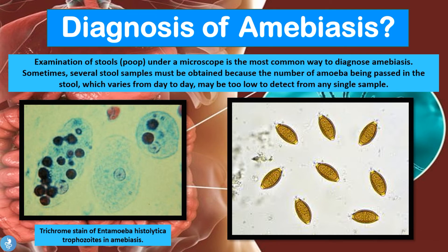Regarding the diagnosis of amoebiasis, examination of stool samples under the microscope is the most common method. Sometimes several stool samples must be obtained because the number of amoebae passed in the stool varies from day to day and may be too low to detect from a single sample. Looking at the microscopic images shown, the first is a trichrome stain of Entamoeba histolytica, showing the typical appearance of the trophozoite on microscopy.